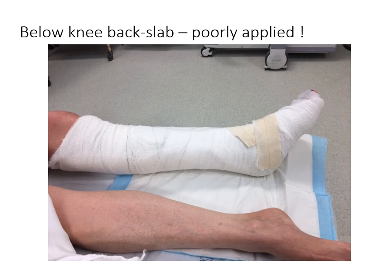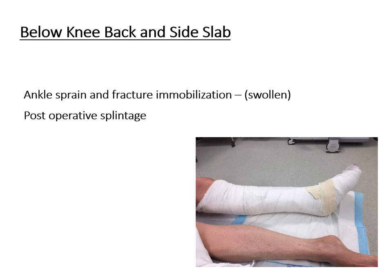In the same way as upper limb backslabs can be applied poorly, so too are lower limb backslabs often applied poorly. Here is an example of a patient with a below-knee backslab where the patient is in equinus and the slab goes too high — just behind the popliteal fossa — which is going to cause a problem when the patient tries to flex the knee. A below-knee back and side slab is used when a patient presents with an ankle sprain or a fracture requiring immobilization but they are too swollen for surgery, during the waiting period, and for post-operative splintage.